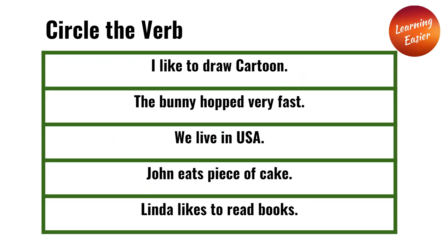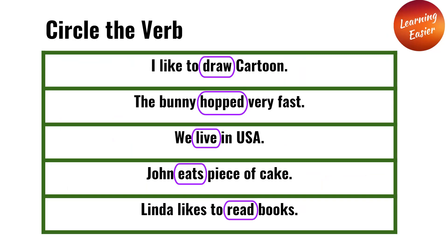Circle the verbs below in the sentences. The verb in the sentence 'I like to draw cartoon' is draw, because that is an action. The bunny hopped very fast — hopped is the verb here.